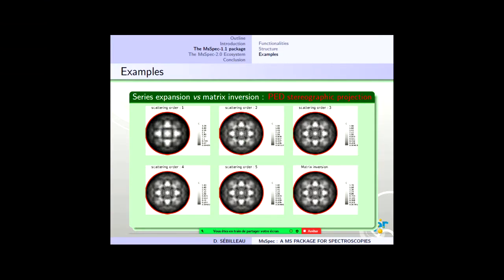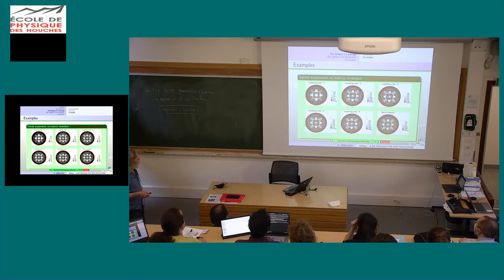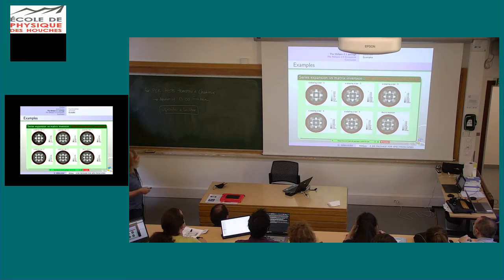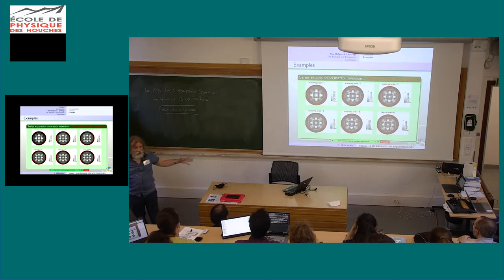Another comparison between the scattering orders is with a stereographic projection. If you look at the exact result from the scattering point of view — matrix inversion — you see that the agreement with scattering order one is not that good. But then already at order two you've almost reached the agreement. This is when you collect the electron all over the surface.